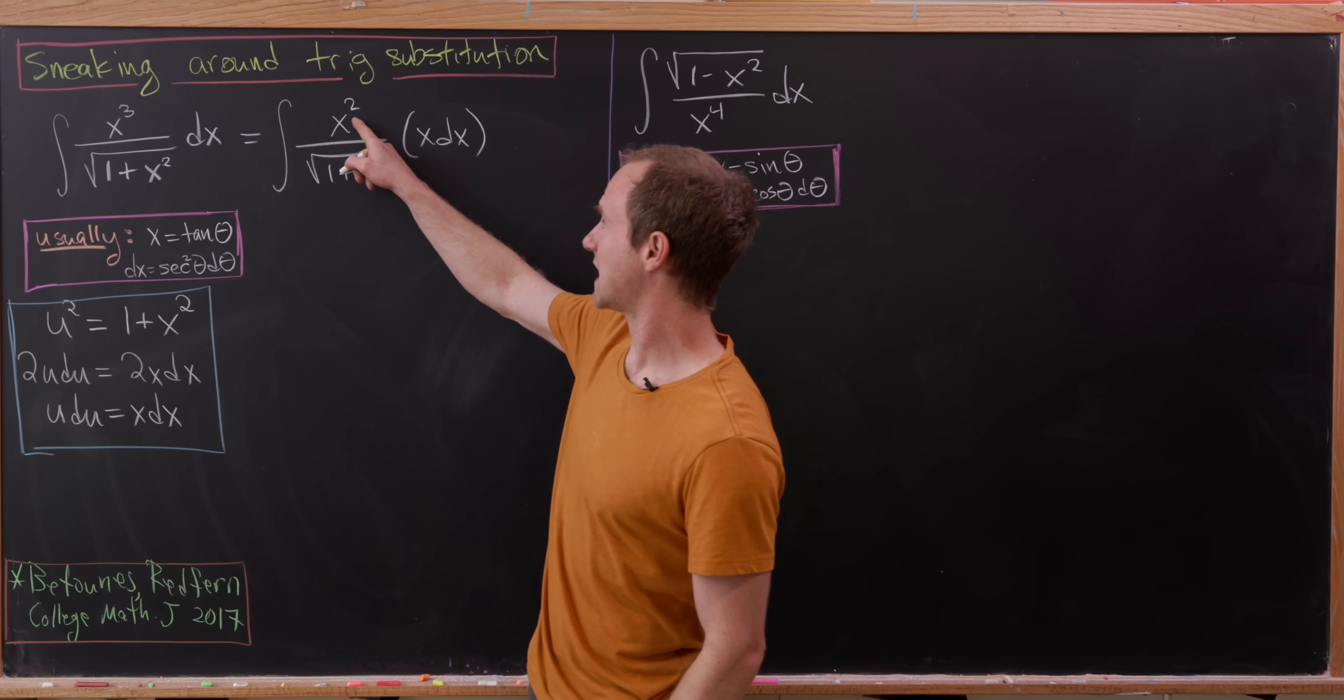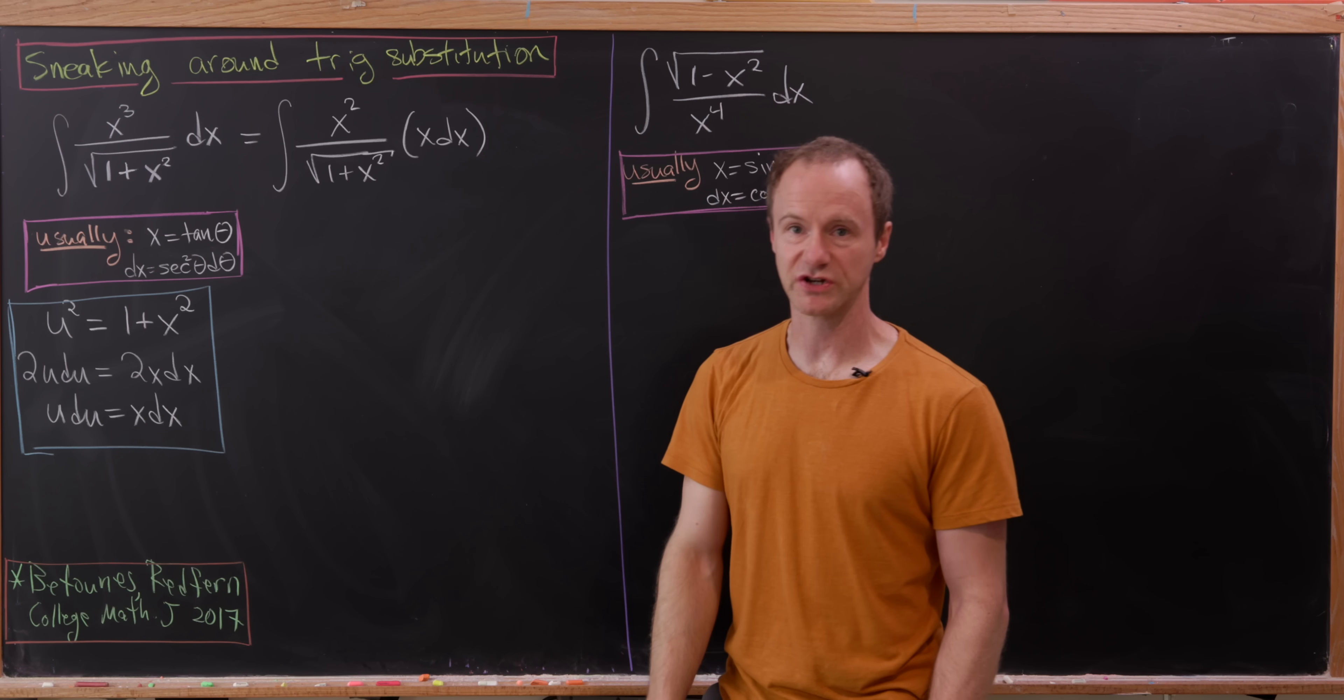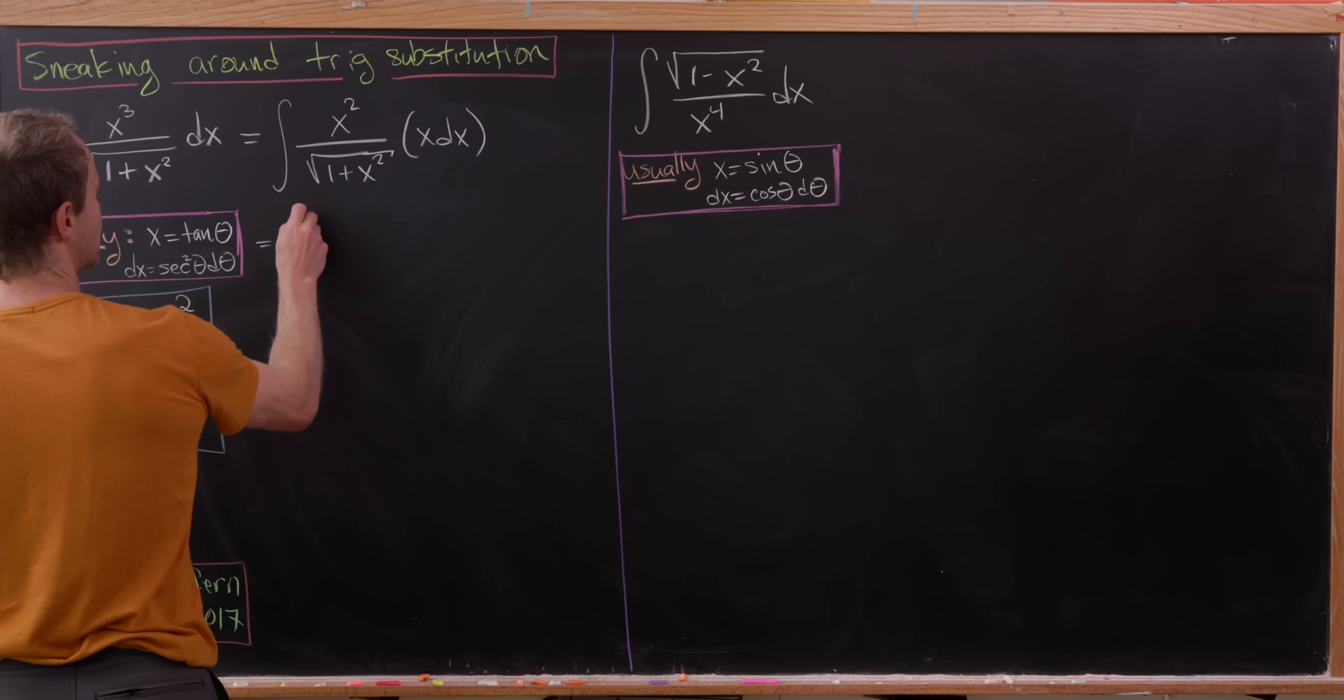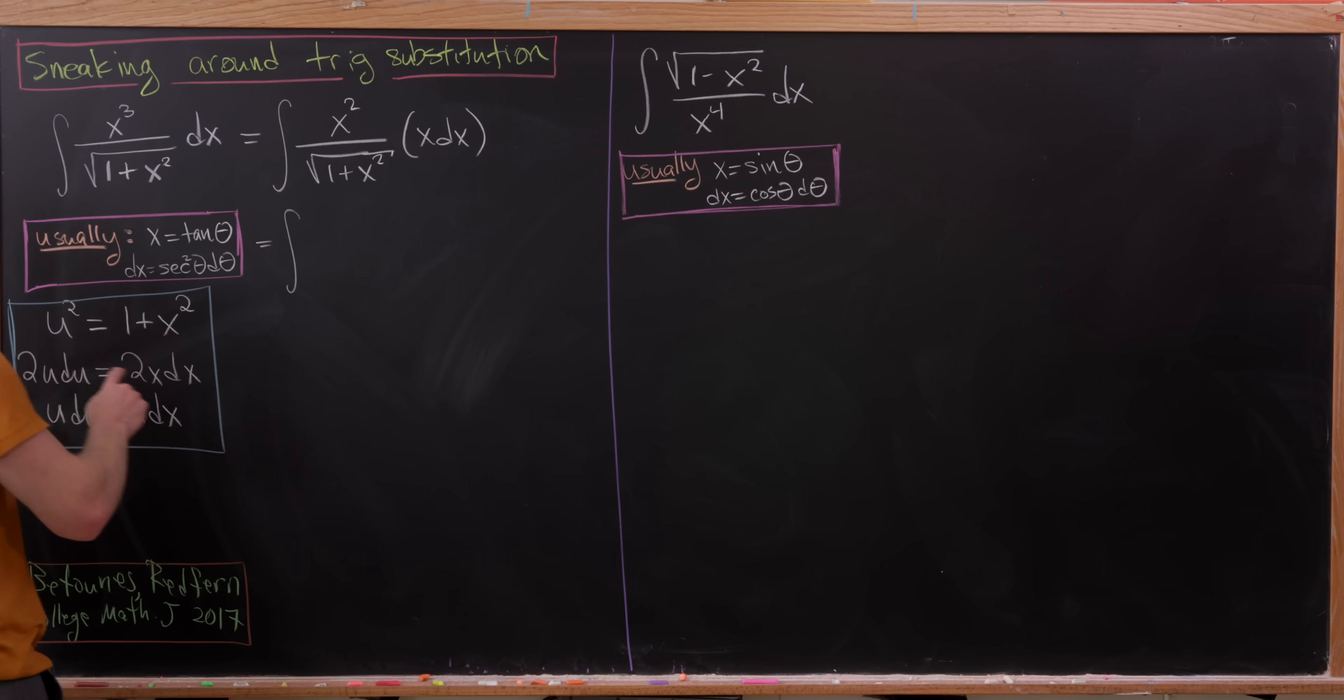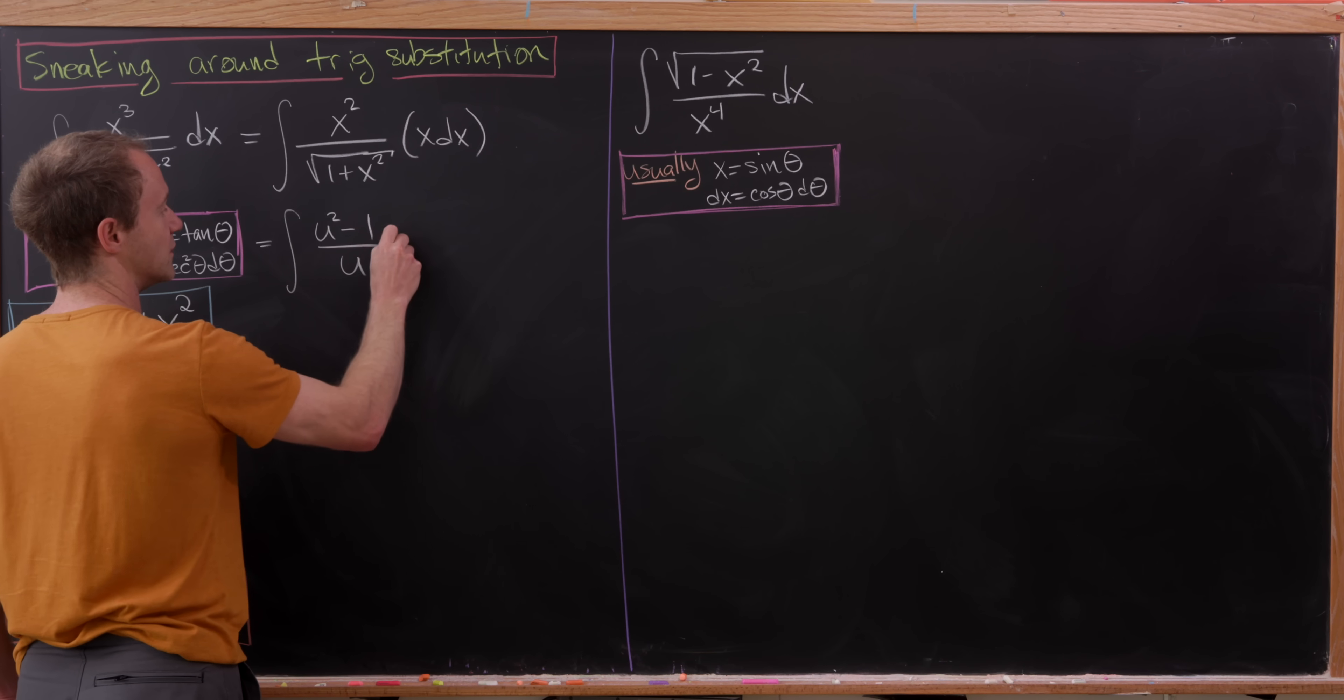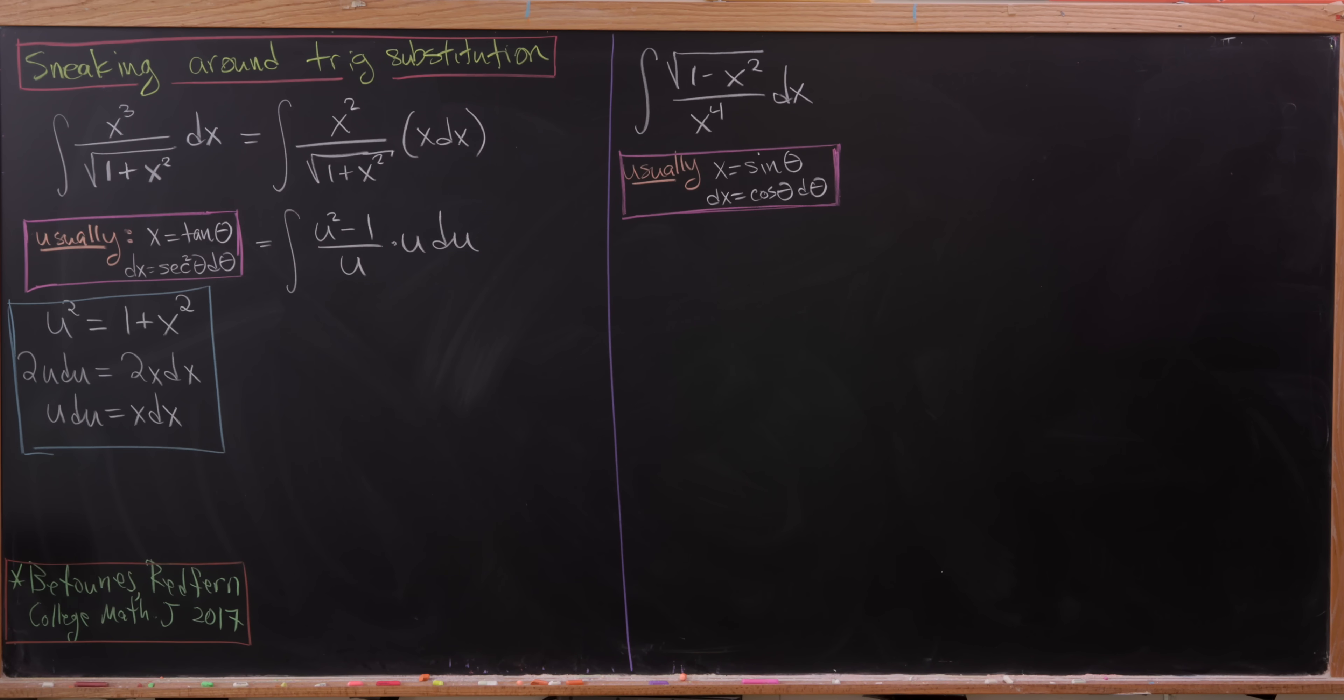That you could worry about if there are bounds of integration. So we'll just say that it's u. And then, well, this x squared can be solved for by using our original substituting equation. So let's see. That's going to eventually give us something like this. We'll have u squared minus 1 over u times u du. Like I said, after our substitution.